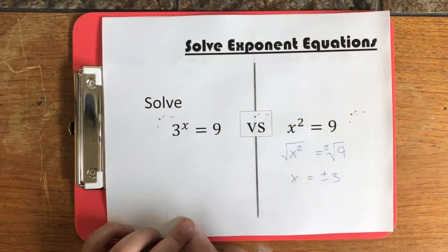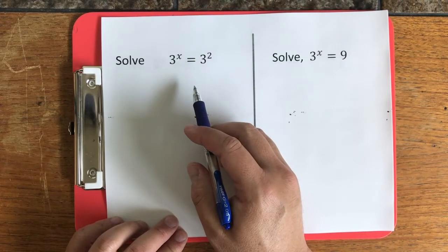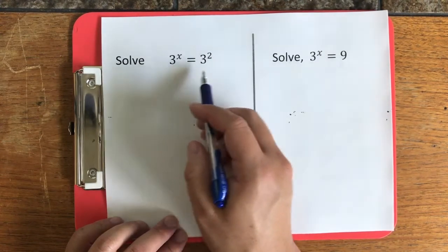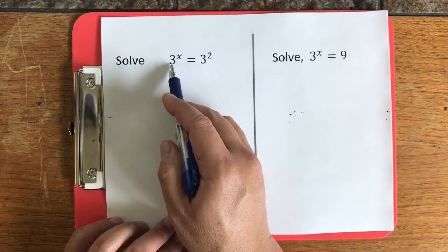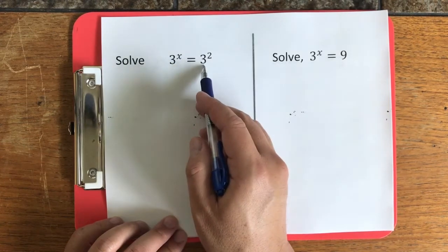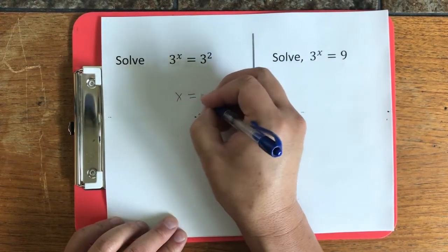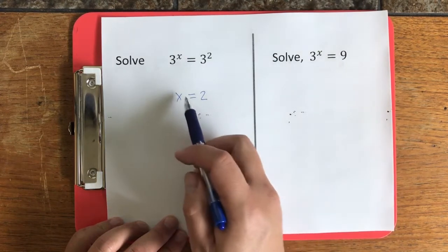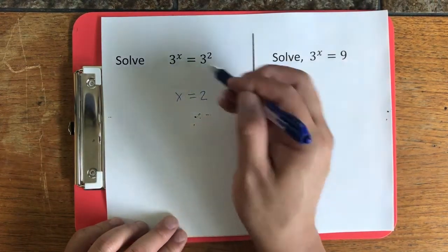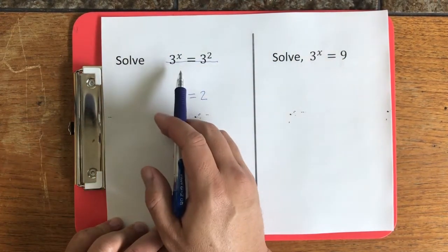Now, we're going to approach these exponent problems in a different way. When I have this problem here, it's pretty obvious that if we just do basic pattern matching that that's the same. The only thing that's different is that the x should be equal to 2. So we can see just by using our own intuition and pattern matching that if the exponents are the same, we can just cross them out and have the exponents be equal to each other.